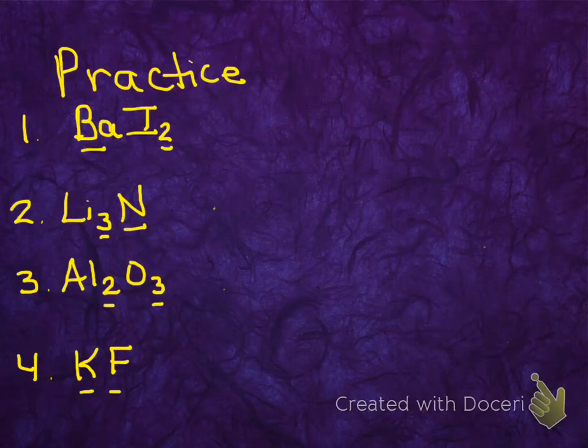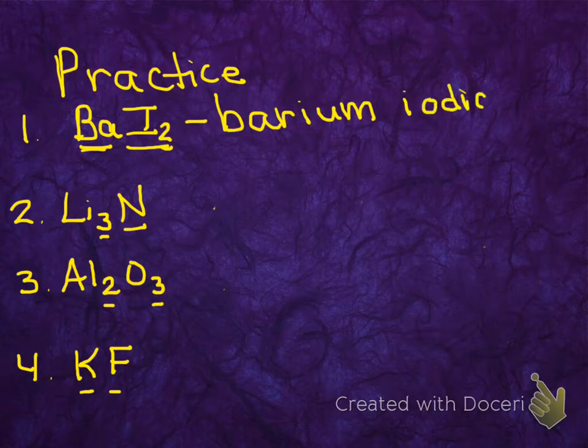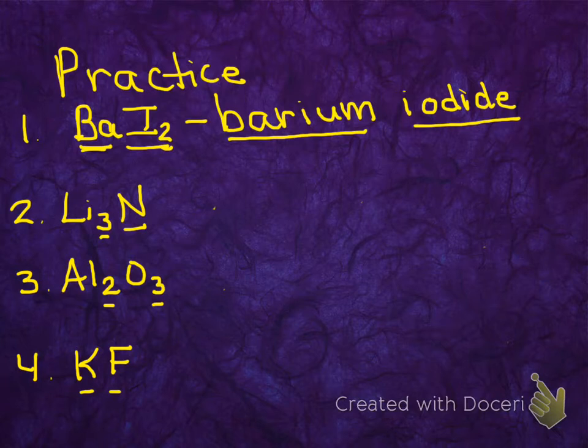Let's look at some examples. Our first example is BaI2. The name of Ba, we look at our periodic table, is barium. I is iodine, but we're going to change the ending to -ide. So this is going to be barium iodide. Notice we're not doing anything with the subscripts. With these little numbers, we're just ignoring them. They don't become part of the name.